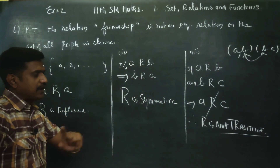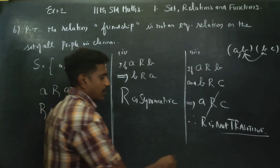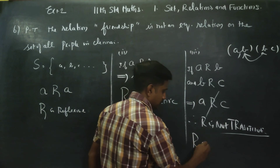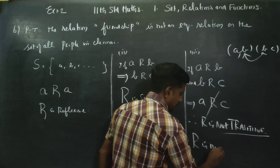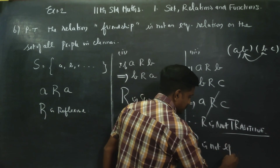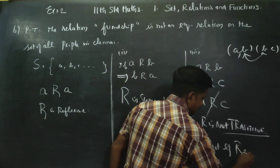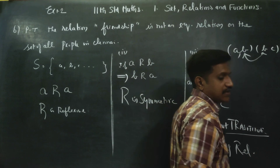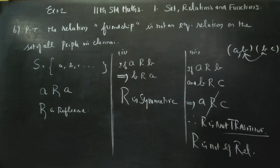Since transitive fails — one failure — R is not an equivalence relation. Therefore, the friendship relation is not an equivalence relation. Thank you.